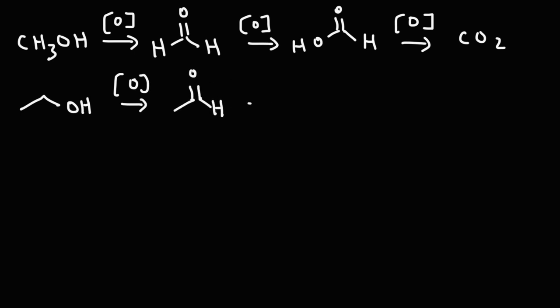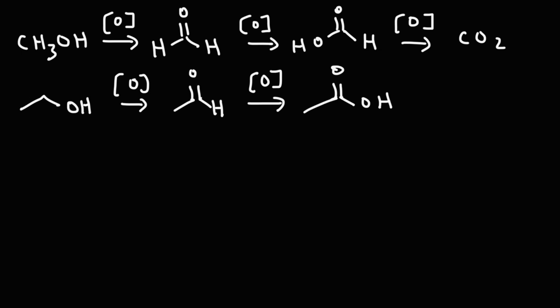When you have a primary alcohol, if you oxidize it it will go to the aldehyde level, but it doesn't have to stop there. If you oxidize it further it will stop at the carboxylic acid level. Under the right conditions with very strong oxidizing agents and heat, you could break the carbon-carbon bonds in ethanol and oxidize it all the way to CO2, but for the test, primary alcohols will typically stop at the carboxylic acid level with a regular strong oxidizing agent.